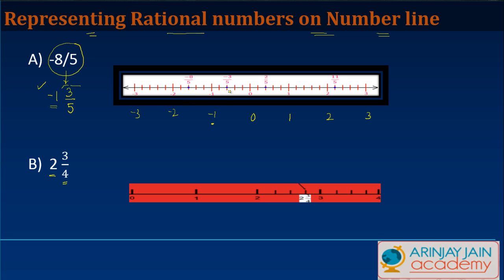Then what I do is between these numbers I divide them equally in such a manner that my denominator is there. Because 3 by 5, let's look at it for a minute, 3 by 5 means what? It means 3 out of 5.